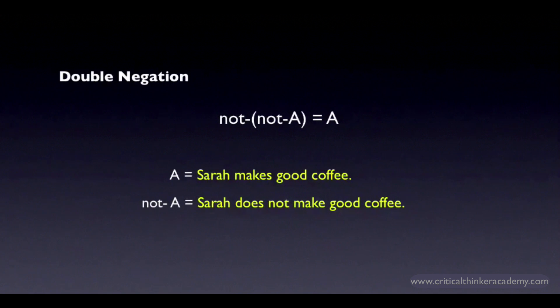It is not the case that Sarah does not make good coffee is also pretty unnatural. You don't have to say this. With double negation, you recover the original claim. So you can just say, Sarah makes good coffee.